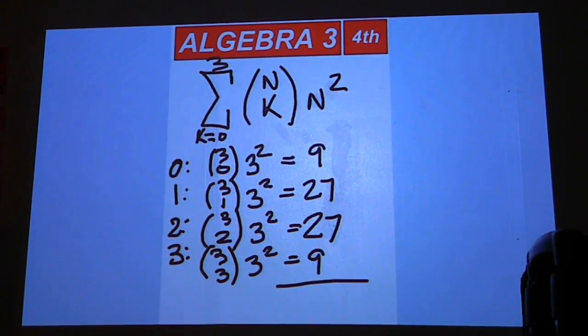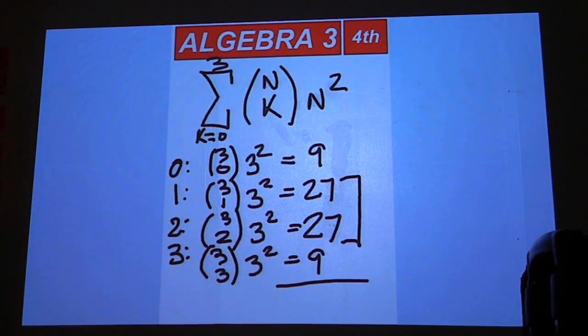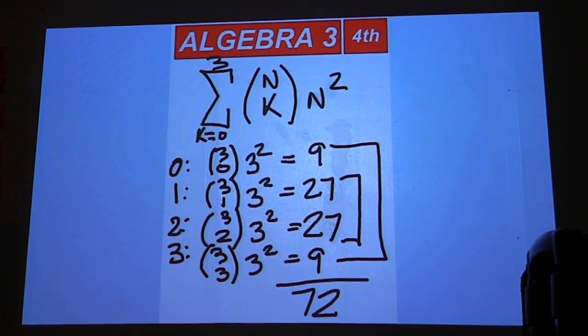Add them up, so you'll have 54 from this bunch here. And then plus an 18 should be 72.